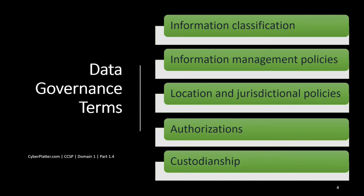The next topic is information and data governance terms. Note that these may vary depending on your organization, geographical location, risk appetite, and so on. Information classification defines the high-level description of valuable information categories such as highly confidential, regulated, internal only, etc. Information management policies define what activities are allowed for different information types. Location and jurisdictional policies define where data can be geographically located and address legal and regulatory implications. Authorizations define who is allowed to access different types of information. Custodianship defines who is responsible for managing the information at the bequest of the owner.